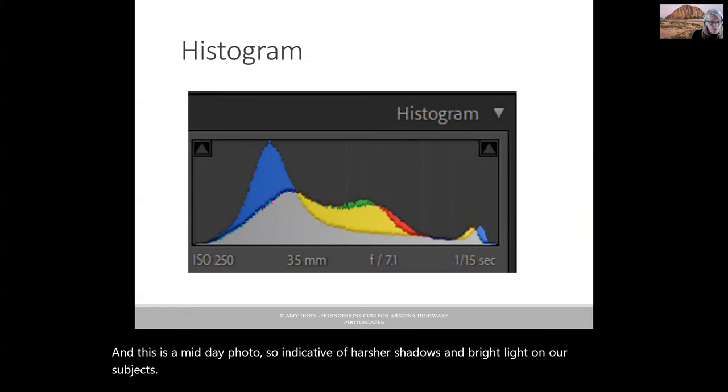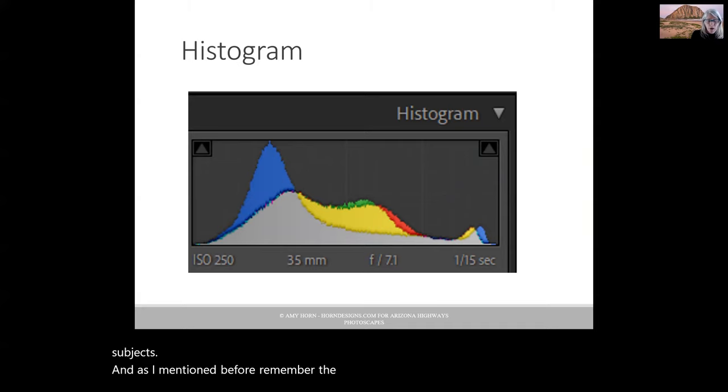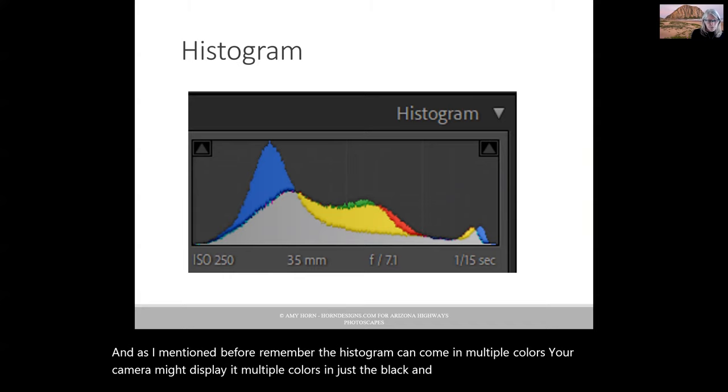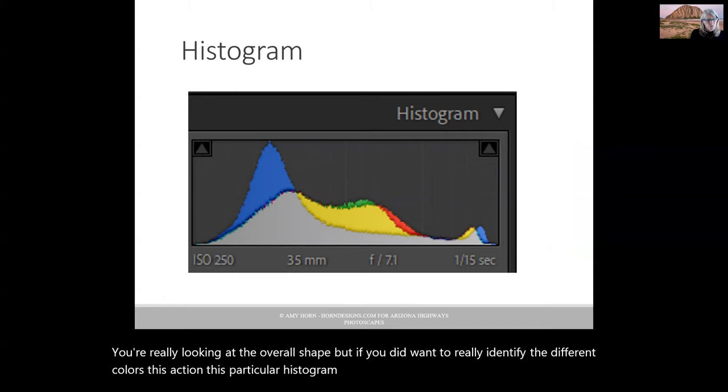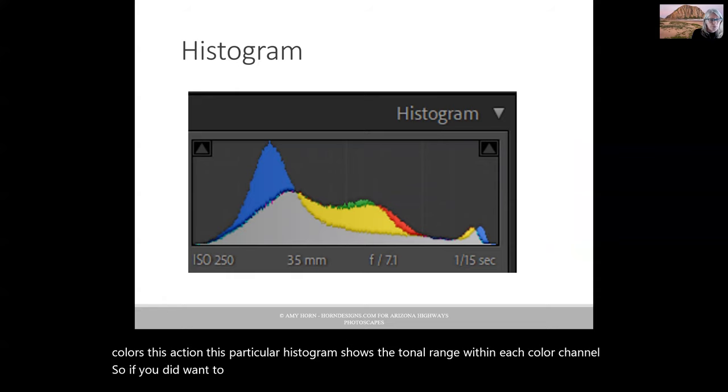And as I mentioned before, remember the histogram can come in multiple colors. Your camera might display it in multiple colors or in just the black and white. Either way is acceptable. You're really looking at the overall shape. But if you did want to really identify the different colors, this particular histogram shows the tonal range within each color channel.